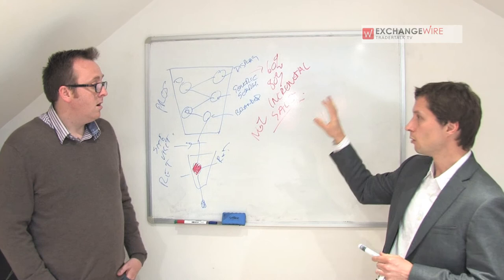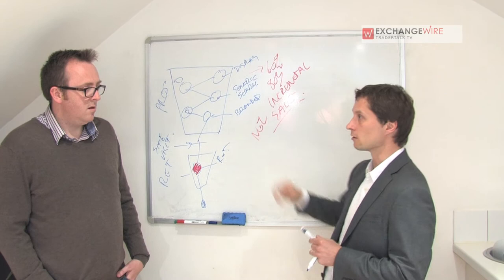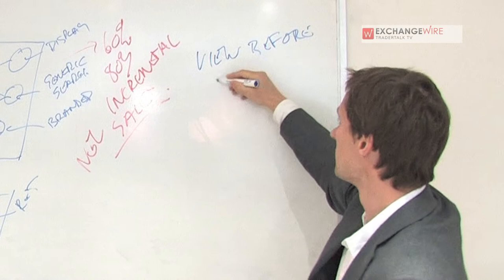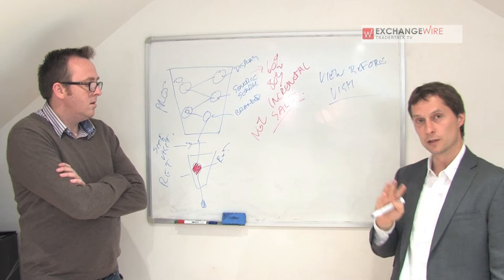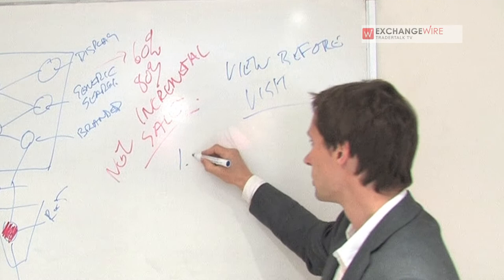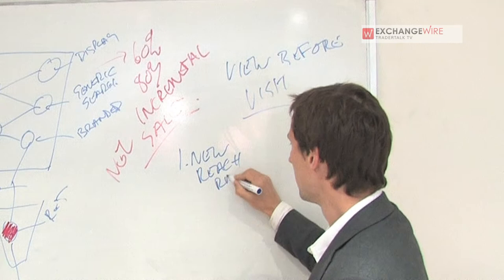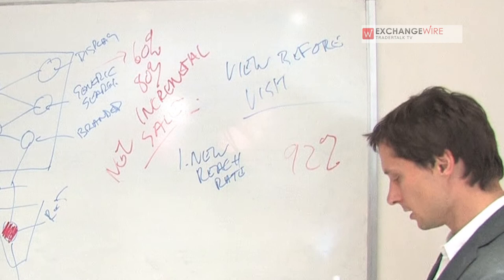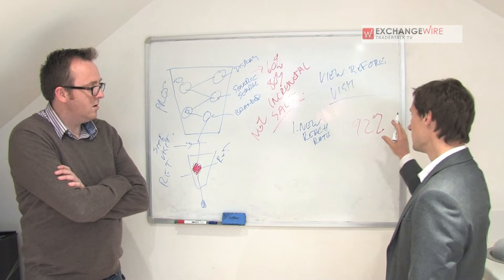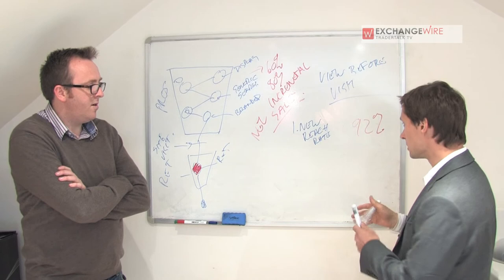View Before Visit tracks what happens when a user views an ad before they visit the site, and thus before they get retargeted. It produces three important variables that make it really simple to understand prospecting. Number one: have you reached new people that have not yet been to the advertiser's site? We call that new reach rate. In this example, let's call that 92% — meaning 92% of all the people we reached, we reached before they went to the advertiser's site, finding new people to pull down the funnel.